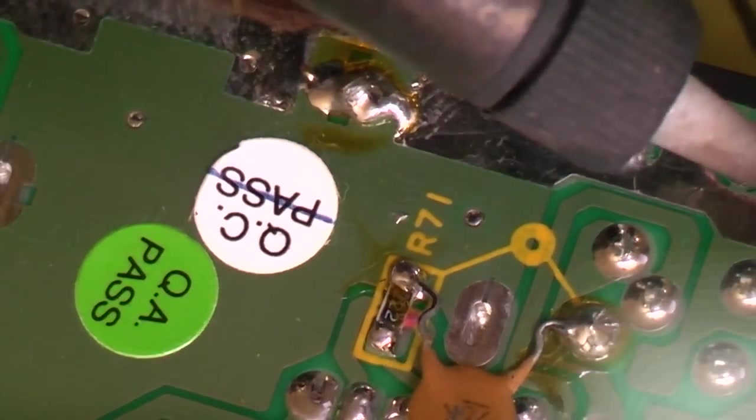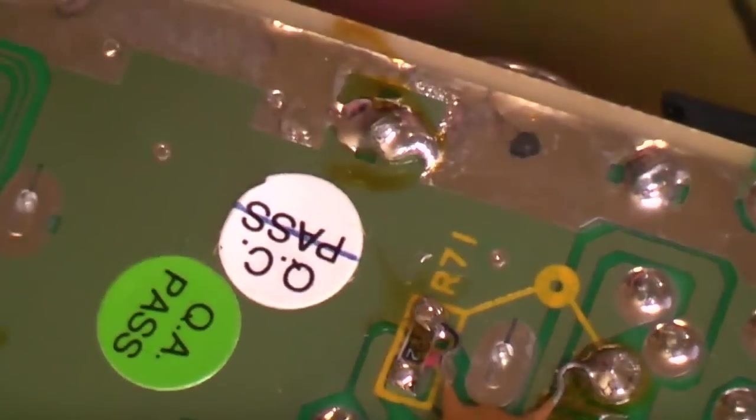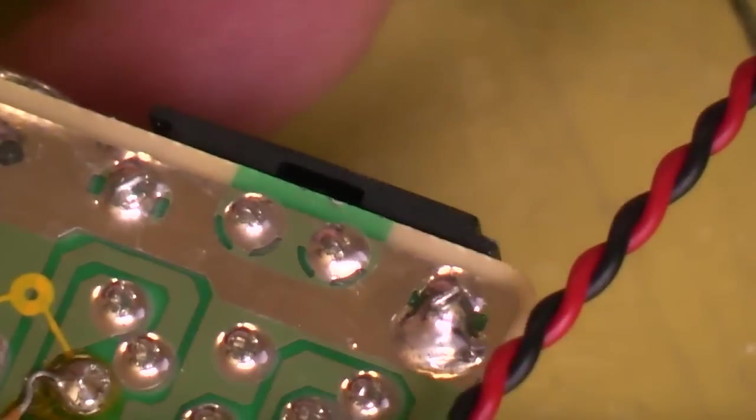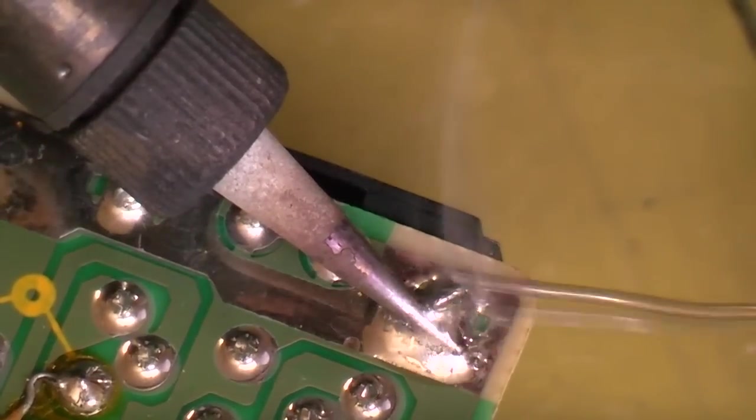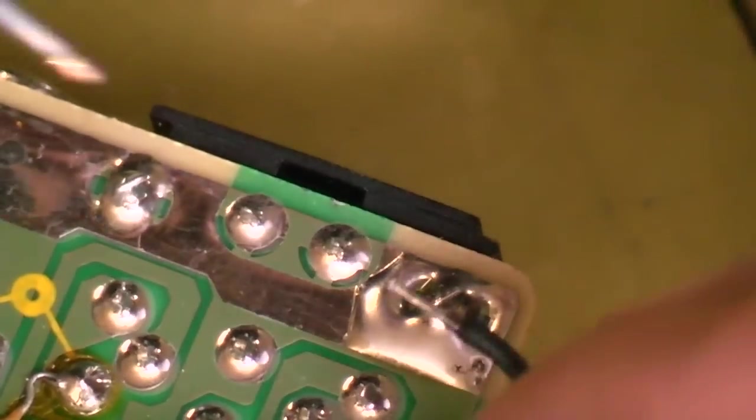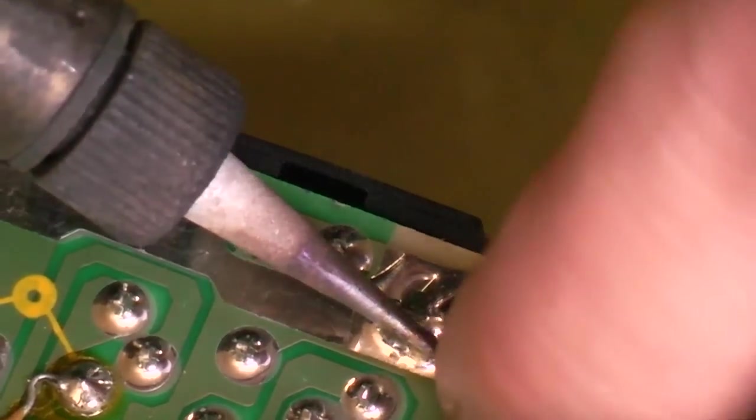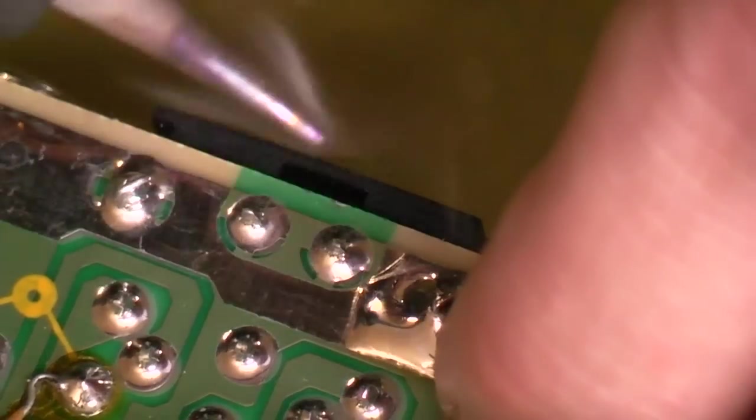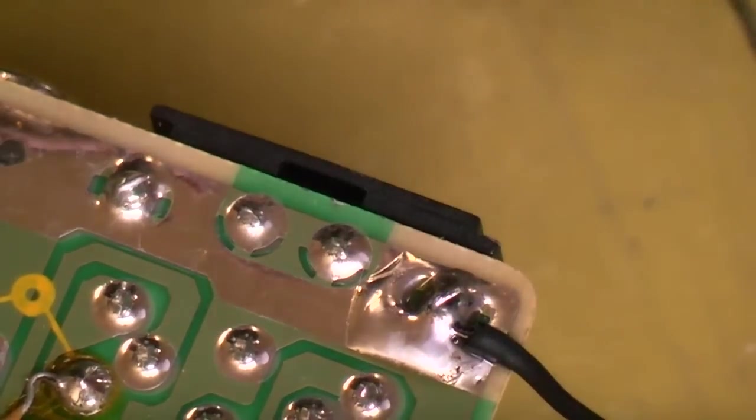All we need to do is just pick somewhere nice and convenient and just add a bit of solder to it so it's nice and easy to solder to. I'm just going to pick somewhere on a strip because it's nice and easy. I'm just heating it up and adding some new solder to it.